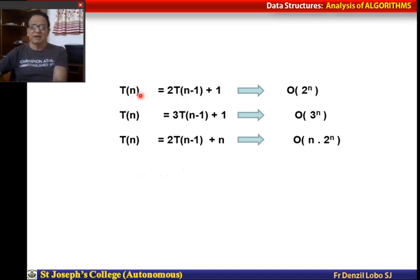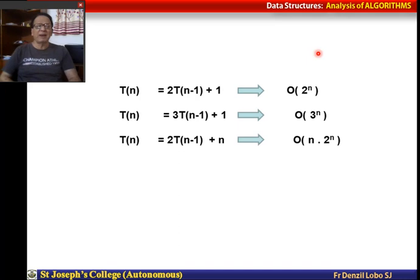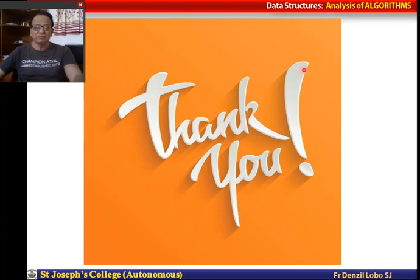For the recurrence T(n) = 2T(n-1) + 1, the complexity is O(2^n). If the coefficient is 3, it becomes O(3^n). And T(n) = 2T(n-1) + n gives O(n · 2^n). This summarizes the complexities of the algorithms we have studied. Thank you very much.